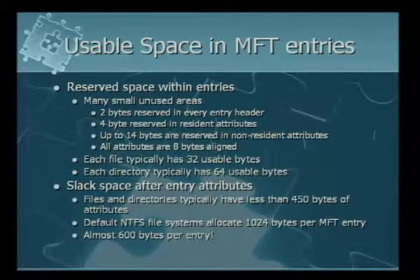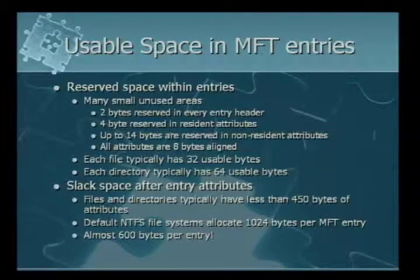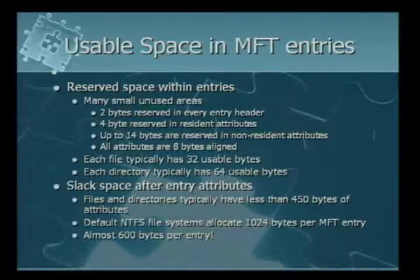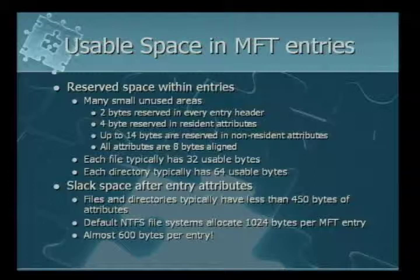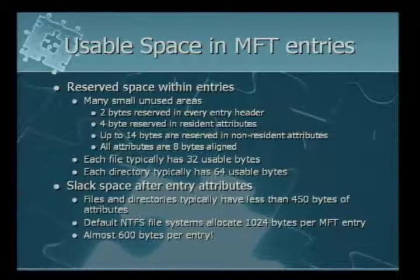Looking for in-band places to hide within the MFT: there are whole bunches of reserved bytes in every attribute. Analysis of live systems found about 32 bytes of reserved space per file and about 64 bytes per directory within attributes. That's not a lot of data. But more interesting is the slack space after every MFT entry — an average file or directory has about 450 bytes of attributes stored within the MFT, yet it's formatted to be 1K in size. That gives you almost 600 bytes for every single file or directory on a system that's there and unused.